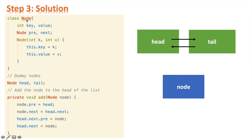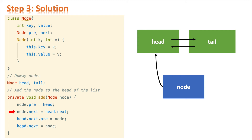Let's look at the Node class first. It has key, value, a pre pointer to the previous node, and a next pointer to the next node. When we initialize the node, we pass in the key and value. Then we have the dummy head and tail. Next is the add function of the doubly linked list, used to add a node to the head. In our initial state: node.pre = head, node.next = head.next, head.next.pre = node, and finally head.next = node. After these four steps, node is at the head of our list.